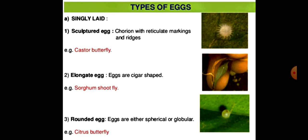The first type is the sculpted egg, which has a chorion with reticulate markings and ridges. Example: the castor butterfly.